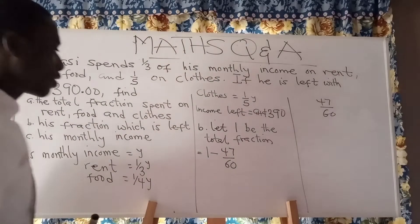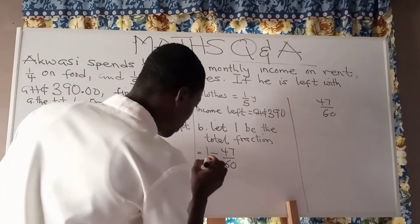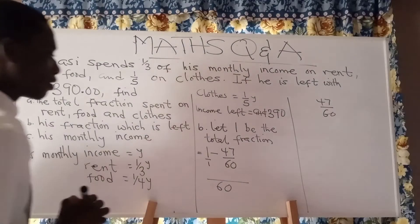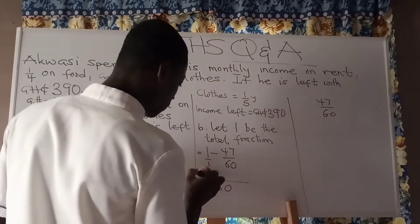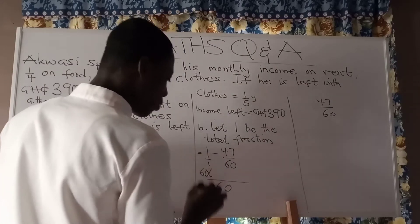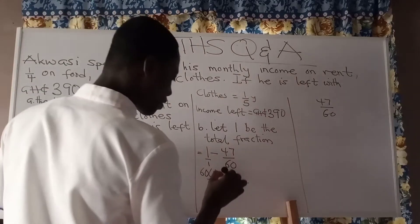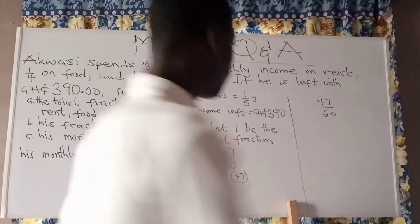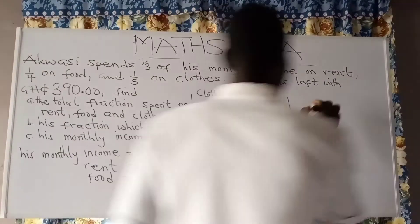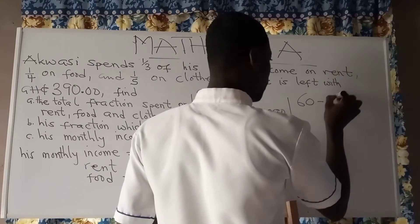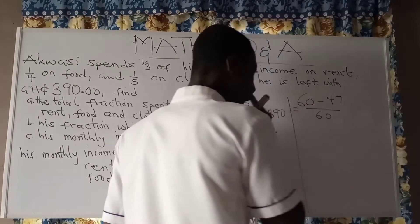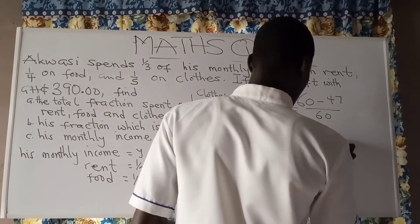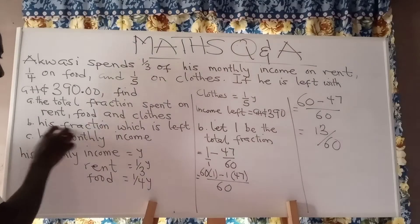To compute 1 minus 47 over 60, we find the LCM of 1 and 60, which is 60. 60 divided by 1 is 60, multiply by numerator 1. Minus: 60 divided by 60 is 1, multiply by numerator 47. So we have 60 minus 47, all over 60, which gives 13 over 60. This is the fraction which is left.